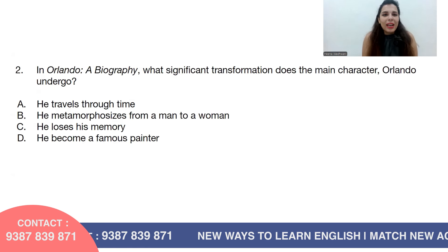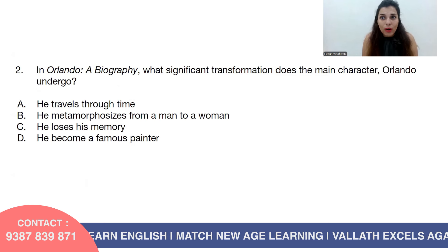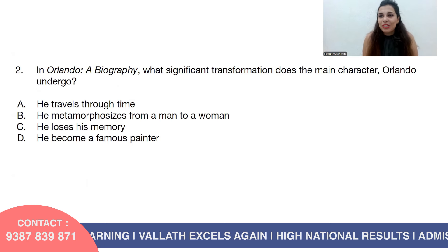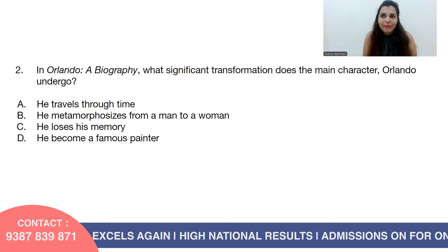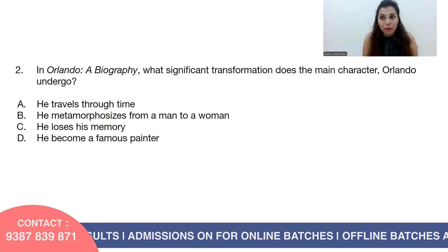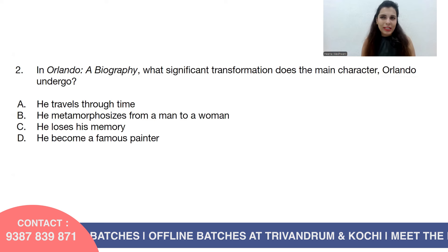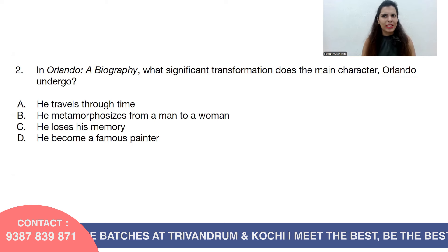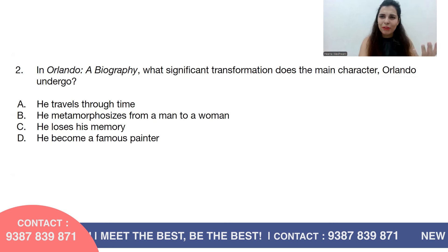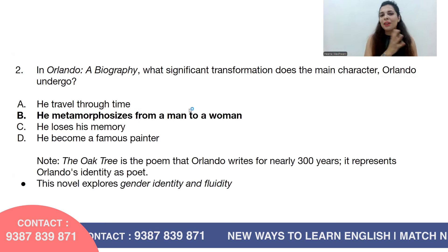Question number two: In Orlando: A Biography, what significant transformation does the main character Orlando undergo? Options: A, he travels through time; B, he metamorphoses from a man to a woman; C, he loses his memory; or D, he becomes a famous painter. Orlando is a poet, not a painter, and he doesn't lose his memory. The answer is option B — Orlando becomes a woman.